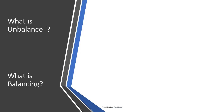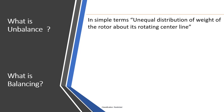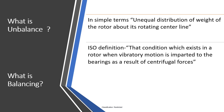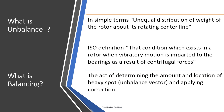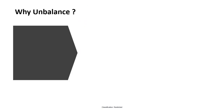What is unbalance? In simple terms, it is an unequal distribution of weight of the rotor about its rotating centerline. ISO defines unbalance as the condition which exists in a rotor when vibratory forces are imparted to the bearings as a result of centrifugal forces. Balancing is the act of determining the amount and location of the heavy spot and applying the correction — the heavy spot being the unbalance vector location in the rotor.